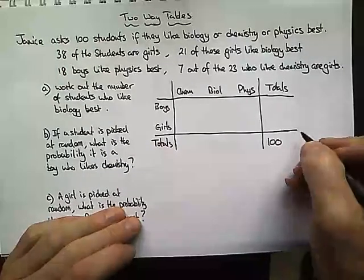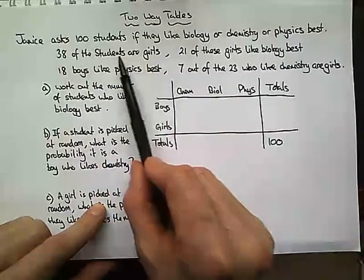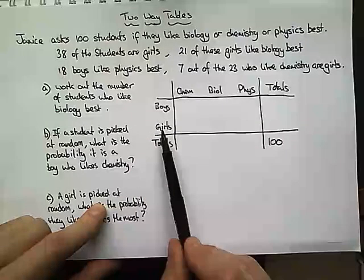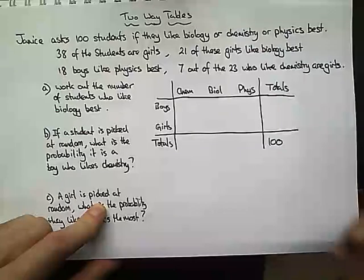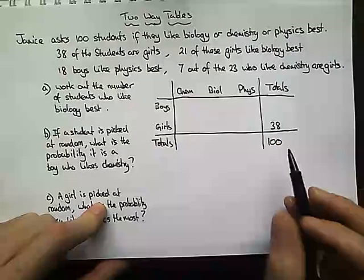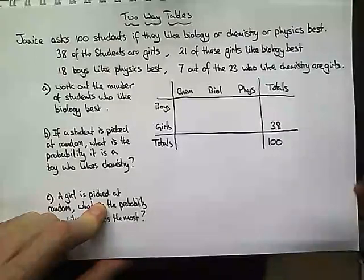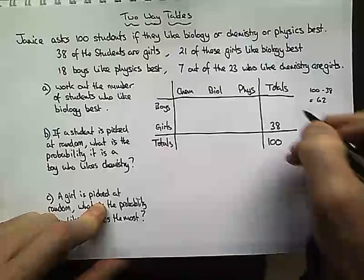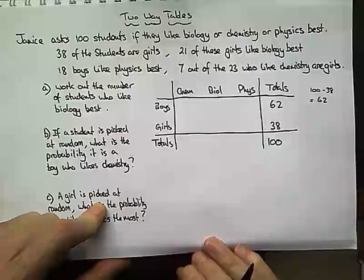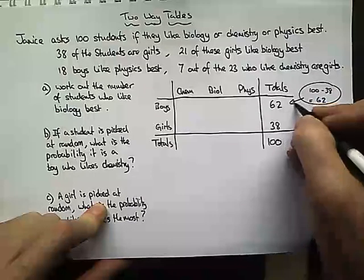They tell us that 38 of the students are girls, so the girls total is 38. If we know there are 38 girls and 100 in total, 100 take away 38 equals 62, so there must be 62 boys. That's how we're going to do this — it's all about adding and subtracting.